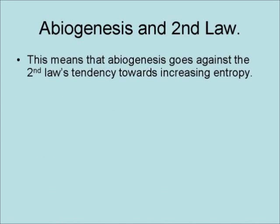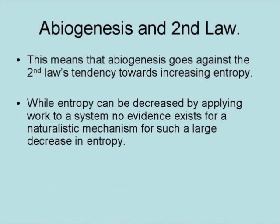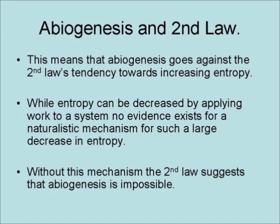This means that abiogenesis goes against the second law's tendency towards increasing entropy. While entropy can be decreased by applying work to a system, no evidence exists for a naturalistic mechanism for such a large decrease in entropy. Without such a mechanism, the second law of thermodynamics suggests that abiogenesis is impossible.